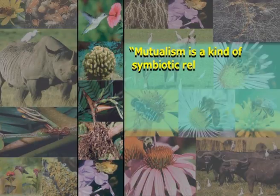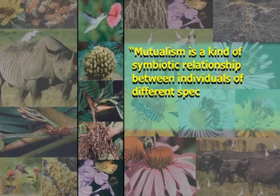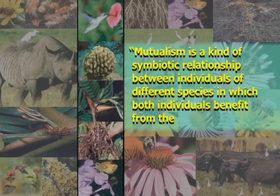Mutualism is a kind of symbiotic relationship between individuals of different species in which both individuals benefit from the association. Mutualism is a common phenomenon found in nature which plays a key role in maintaining the ecological integrity of the biosphere. Mutualism has apparently made important contributions to the evolutionary history of life. Mutually beneficial interspecific interactions are usually found in tropical regions. The need for mutualism increases with decreased resource availability and mutualism is most frequent in stressful habitats.